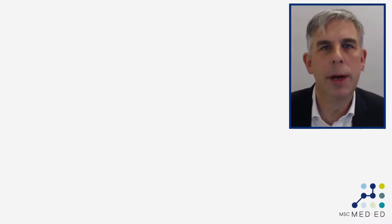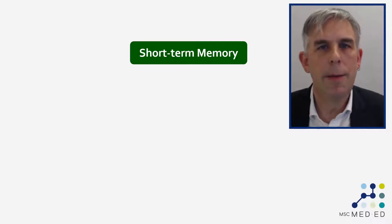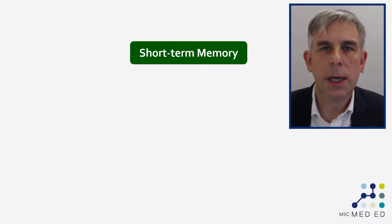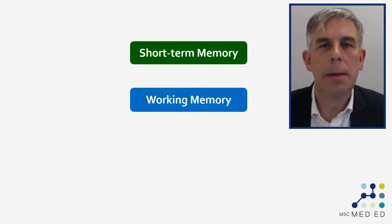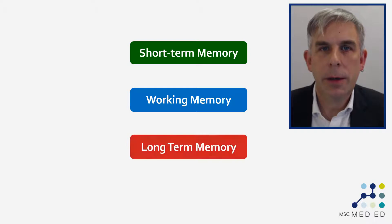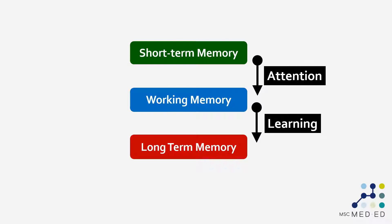That's because you're using a different type of memory in those two different tasks. There are three main types of memory you need to be aware of when considering cognitive load theory. The first is short-term memory, otherwise known as sensory processing — you're processing a huge amount of information at any one time, most of it you're not even conscious of. When you pay attention to a particular piece of information, it goes into your working memory. Once you learn that piece of information, it goes into your long-term memory. Attention drives information from short-term memory into working memory; learning gets information from working memory into long-term memory. It's a simplistic explanation, but it's enough to help us understand cognitive load theory.